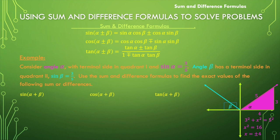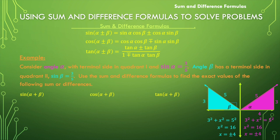Now we do the same thing with angle beta. Three squared plus x squared equals five squared, so x squared equals 16 and x equals plus or minus four. There's our reference right triangle. Since beta is in quadrant two, x will be negative four.